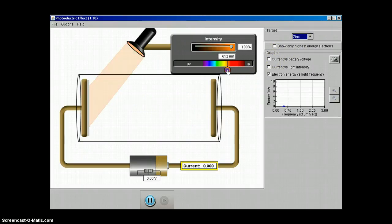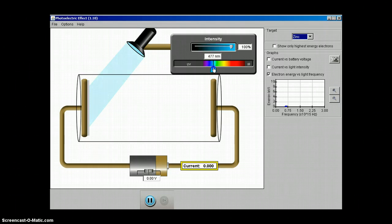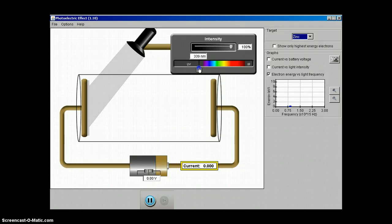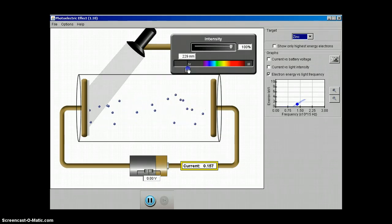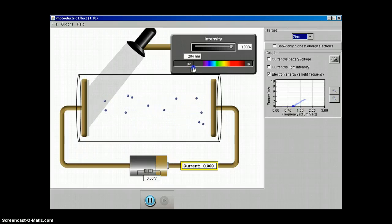We change this to zinc, we turn this up, still going, still going, still going. And it wasn't until we got into ultraviolet, somewhere in here, where you can see photoelectrons started being emitted from the zinc plates. Obviously we would do the same thing adjusting the battery if we wanted to figure out how much energy they actually had.